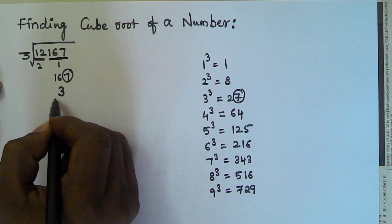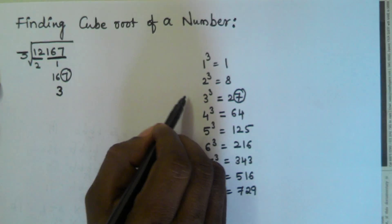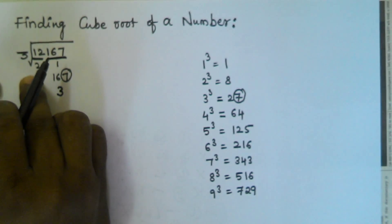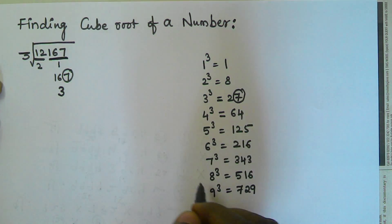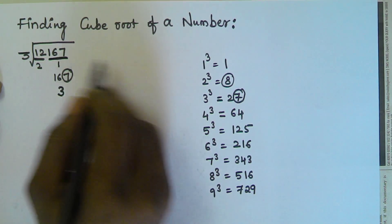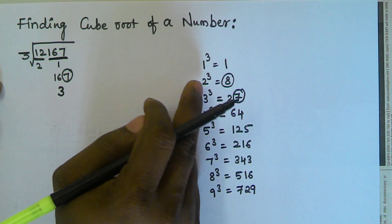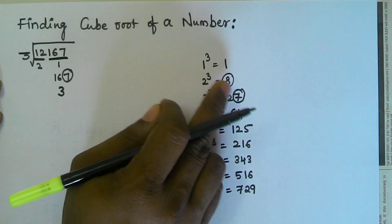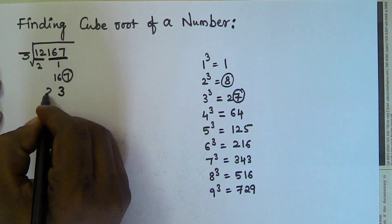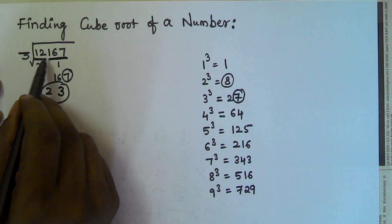Corresponding to the rightmost part we take 3. Next, for the second part 12, we find the maximum cube value from 1 to 9 that we can subtract from 12. That is 8 (2 cube), since we cannot subtract 27. So the corresponding digit is 2. Therefore the cube root of 12167 is 23.